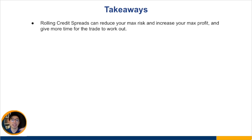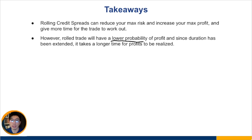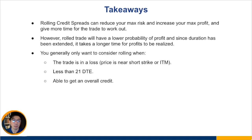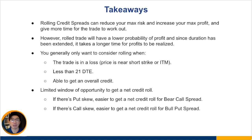Key takeaways: rolling credit spreads can reduce your max risk and increase your max profit, and it gives you more time for the trade to work out. However, rolled trades have a lower probability of profit, and since duration is extended, it takes longer for profits to be realized. Only consider rolling when the trade is at a loss or when the price is near or touches the short strike and there's less than 21 days to expiration, and you're able to get an overall net credit. Remember, there's a limited window of opportunity to get a net credit roll: if there's put skew, it's easier to roll for a net credit on the bear call spread; if there's call skew, it's easier for the bull put spread.